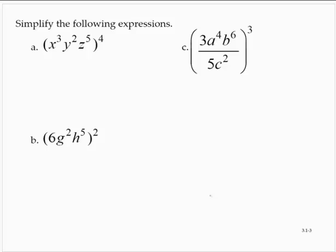Simplify the following expressions. One of our rules for exponents tells us that if we have a product to a power, we can raise each factor to the power. Similarly, if we have a quotient — a fraction to a power — we raise the numerator to the power and the denominator to the power.